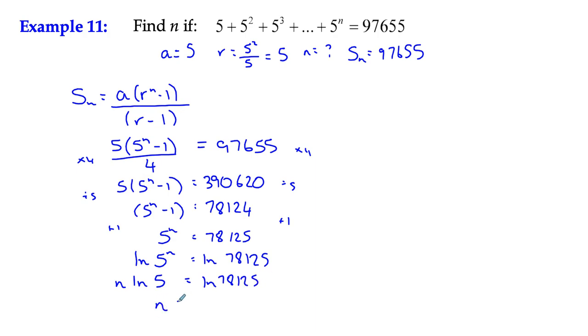So to get n, all I need to do is the calculation: n = ln(78,125)/ln(5), which works out as 7.